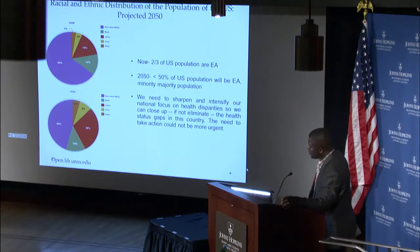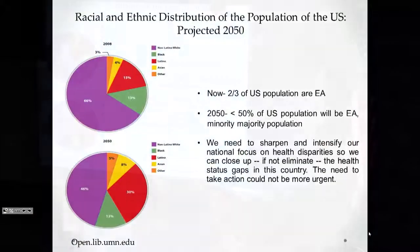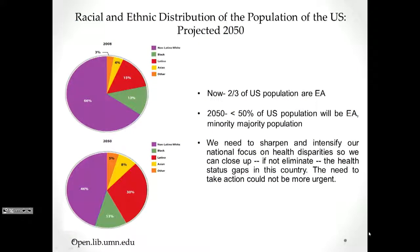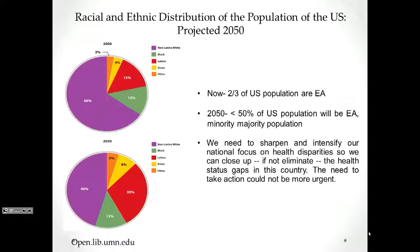The current racial and ethnic distribution of the US population is about 66% white or Caucasian, 13% Black, 15% Latino, and a small proportion Asian. It is projected that by the year 2050, the US population will consist of less than 50% Caucasians — a minority-majority population. Since many diseases disproportionately affect minorities, it is important that we address health disparity. Otherwise, by year 2050, we are going to have a huge burden on the healthcare system because of the changes in demographics.